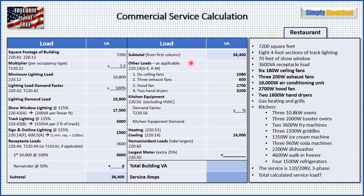Next we go on to other loads — pretty much anything we haven't considered yet, aside from kitchen equipment and heating and cooling. We have 6 ceiling fans at 180 watts each: 6 times 180 is 1,080 watts. We have 3 exhaust fans at 200 watts each: 600 watts total. We have a 16,000-watt AC unit, which we'll list separately down below to compare against heating later. We have a 2,700-watt hood fan — which does not go under kitchen equipment, as I'll explain. And we have two 1,600-watt hand dryers: 3,200 watts total.